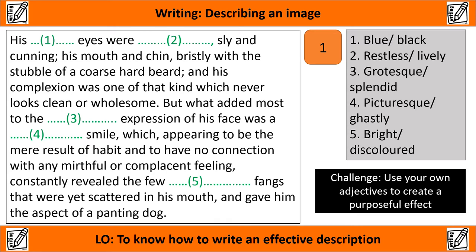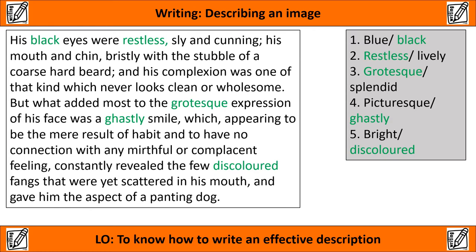Let's have a look at the answers. 'His black eyes were restless, sly and cunning, his mouth and chin bristly with the stubble of a coarse, hard beard, and his complexion was one of that kind which never looks clean or wholesome. But what added most to the grotesque expression of his face was a ghastly smile, which appearing to be the mere result of habit and having no connection with any mirthful or complacent feeling, constantly revealed the few discoloured fangs that were yet scattered in his mouth and gave him the aspect of a panting dog.' You have time now to self-assess your answers — hopefully you chose adjectives which helped to convey a villainous, grotesque, and rather unsightly character.